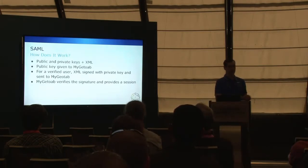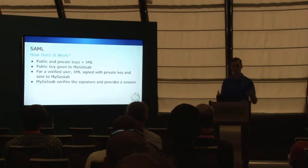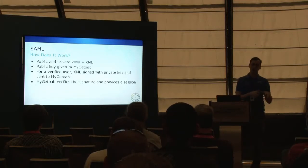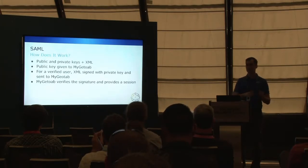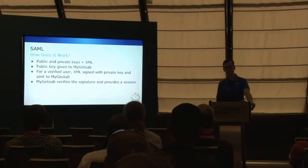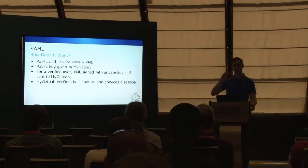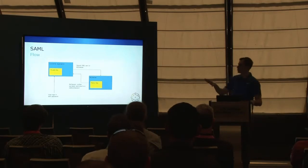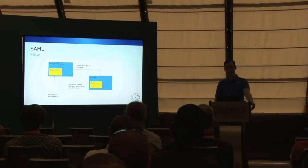The public key is fine to hand out — all it does is verify the signature on a set of XML. You log into the customer application, which generates some XML saying it's for, say, Nathan Mazzatelli, signs it, and sends it to MyGeotab. MyGeotab checks that signature, confirms there's a user named Nathan Mazzatelli, and lets you in. It will either return a session just like a normal authenticate call, or it can return a 302 redirect so the user is just redirected into MyGeotab.